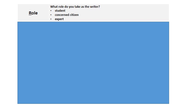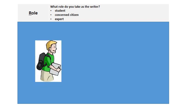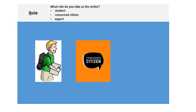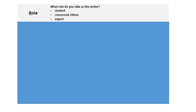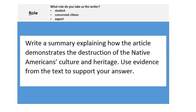First, you need to ask yourself, what role do you take as the writer? A student? A concerned citizen? An expert? With this prompt, you can assume the role of a student. The sample prompt reads: Write a summary explaining how the article demonstrates the destruction of the Native American's culture and heritage. Use evidence from the text to support your answer.